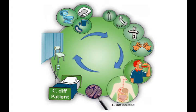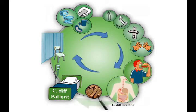C. diff is commonly contracted through the mouth, from medical equipment, pans, curtains, and ultimately hands. In the human intestines, C. diff creates toxins that cause serious inflammation, diarrhea, and cell death. C. diff is then spread again through fecal contamination.